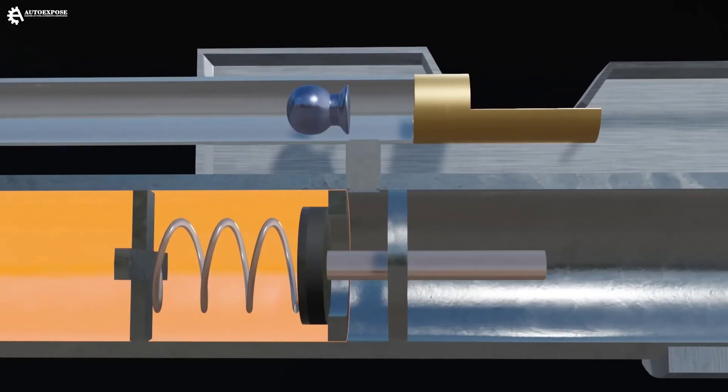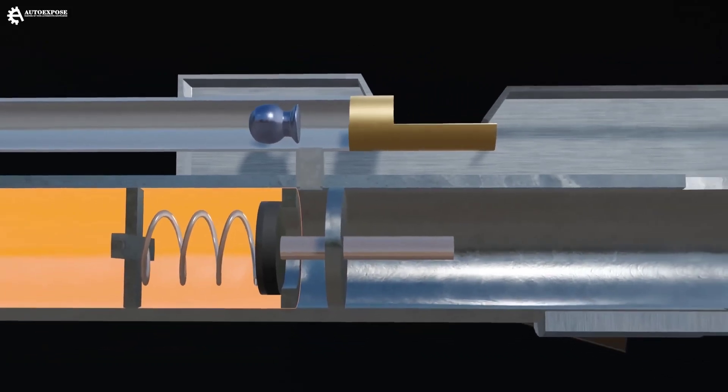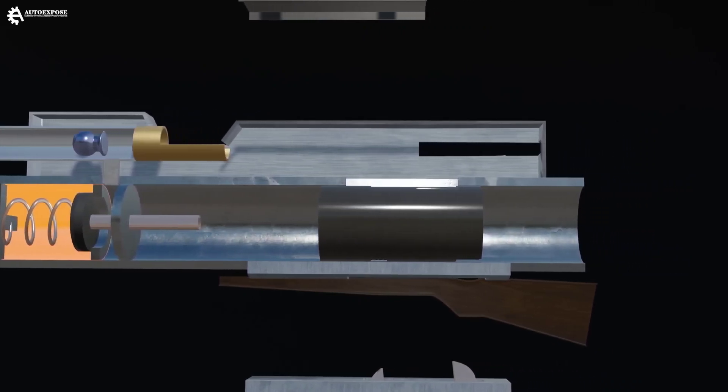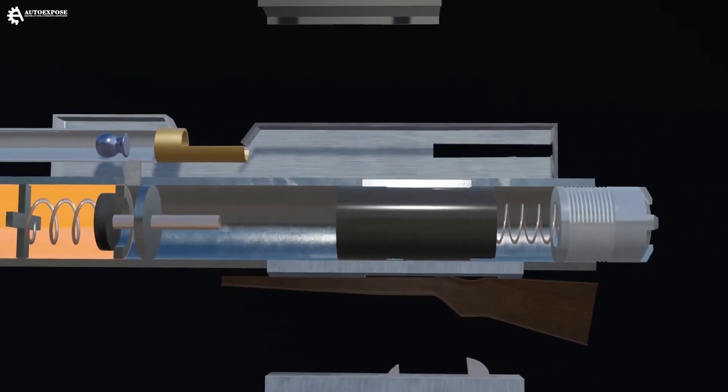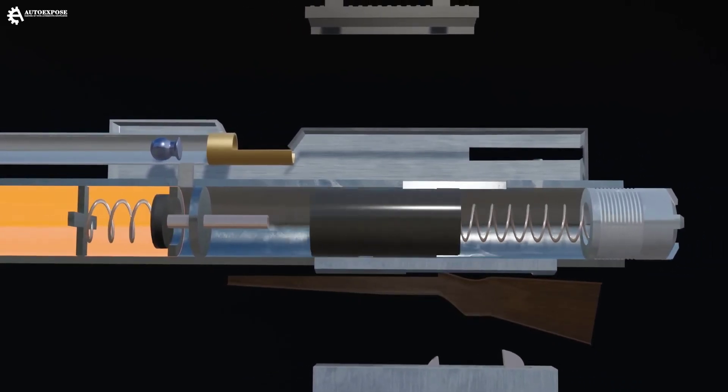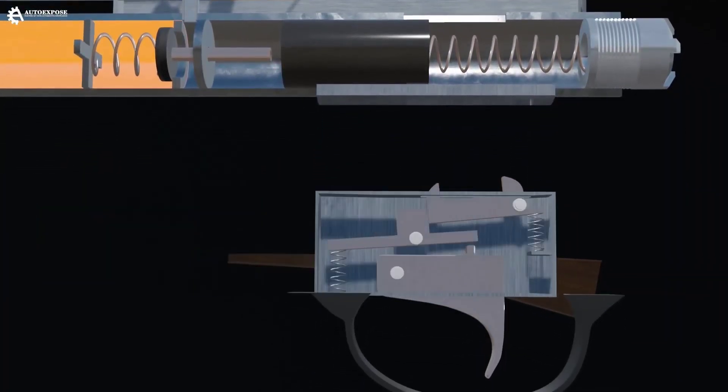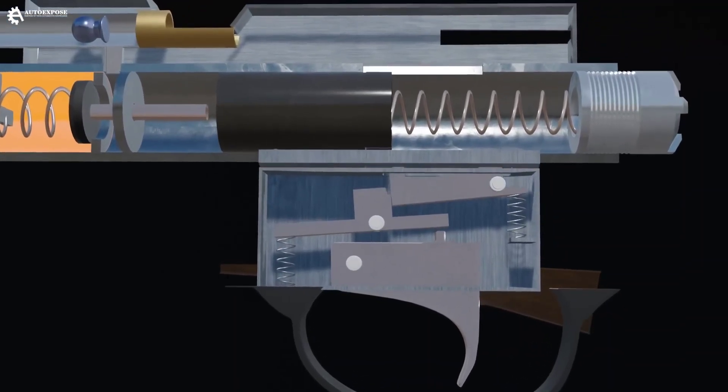This valve will open if the iron rod is pressed forward. To press it, there is a component called a piston hammer located behind the high-pressure tube. Behind the piston hammer is a spring that is used to push the piston hammer so that it can press the valve. The movement of the piston hammer is controlled by the trigger mechanism located under the piston hammer.